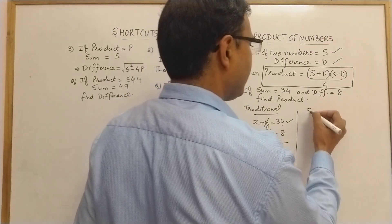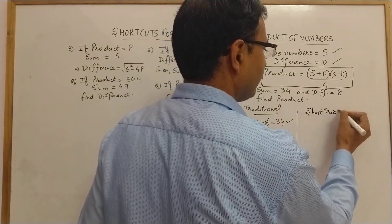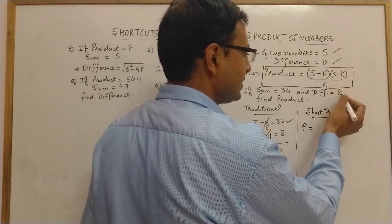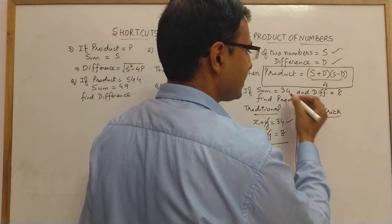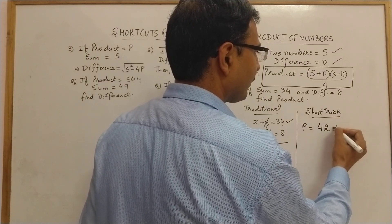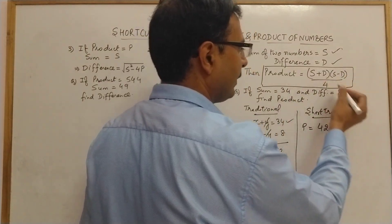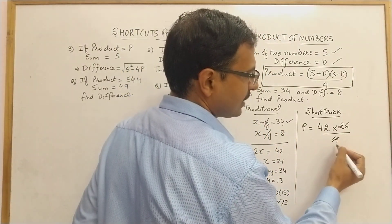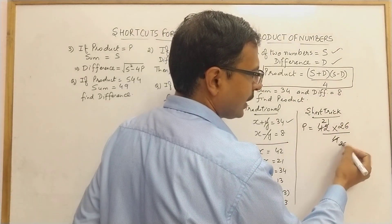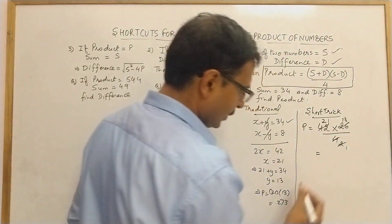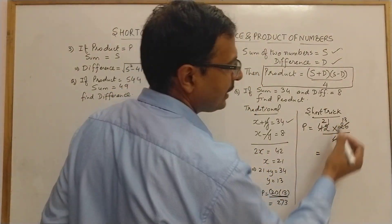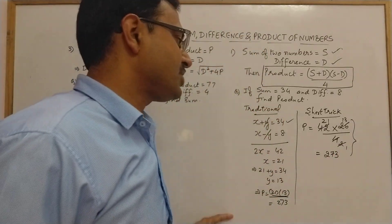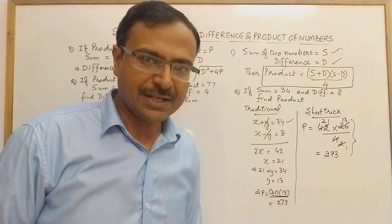Now see the short trick. Find the product directly: (sum+difference)×(sum-difference)÷4. That's (34+8)×(34-8)÷4 = 42×26÷4 = 21×13 = 273. This gives the answer directly with much less time consumption.